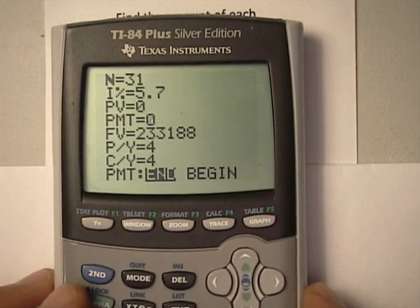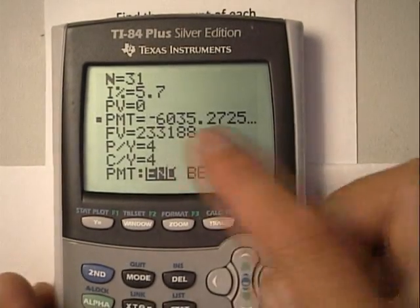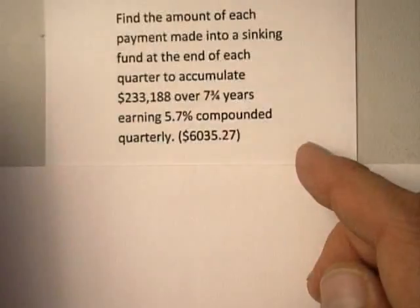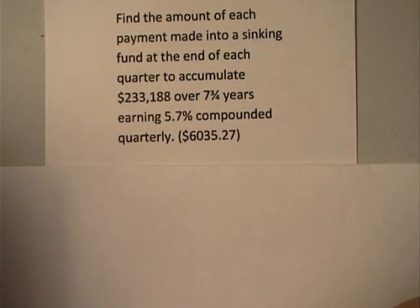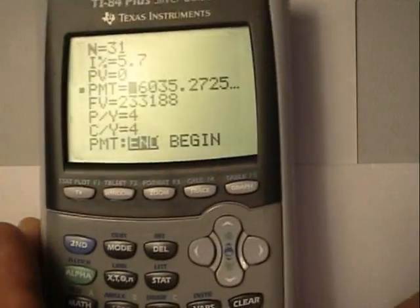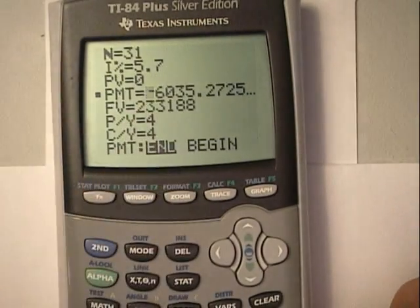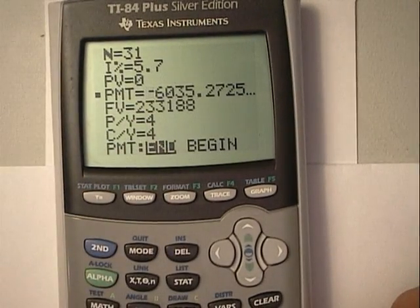Alpha, enter to the present value. And I get $6,035.27 every quarter, every three months in order to make this amount of money in the very end. Thank you.